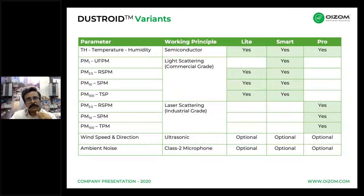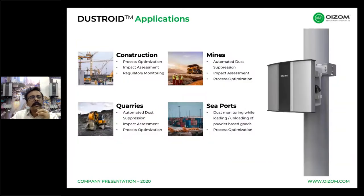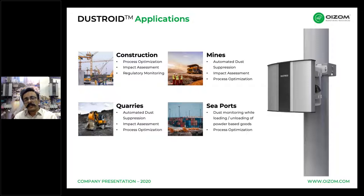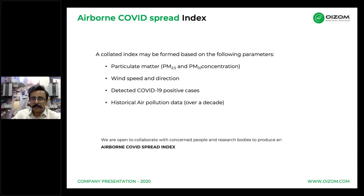The Dustroid Pro version is designed for critical applications like industries, mining, and construction, while the Light version is ideal for ambient monitoring. Wind speed and direction help understand airflow and support software-based modeling. Threshold limits can be set for construction and mining activities, and data from Dustroid can help automate mist cannons for dust suppression at quarries, sea ports, and other dust-prone locations.